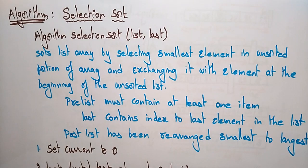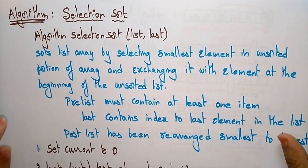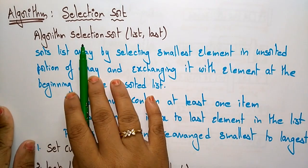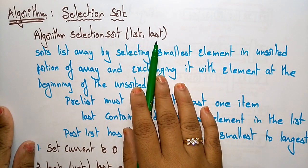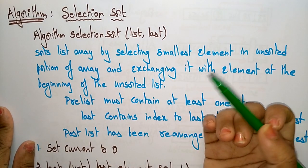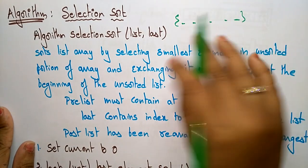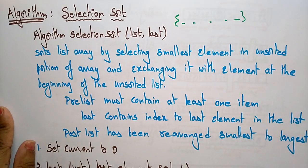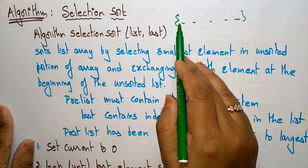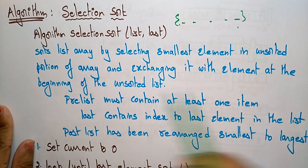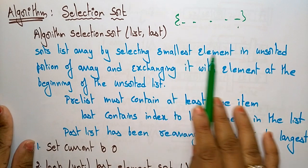Let us continue with selection sort. In the previous video I explained the definition and a simple example. Now let's see the algorithm for selection sort. The algorithm takes the list and the last element — the total number of elements present in the array — from starting to the ending of the elements.